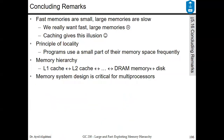As a concluding remark at the end of this chapter: fast memories are small, large memories are slow — we really want both fast and large memories, and caching gives this illusion. The principle of locality includes temporal locality and spatial locality. Programs use a small part of their memory space at any given time.